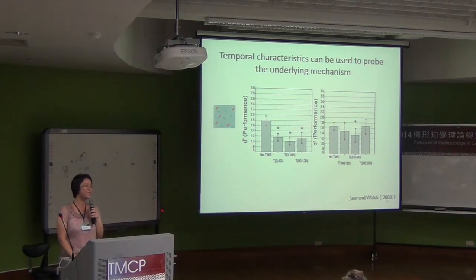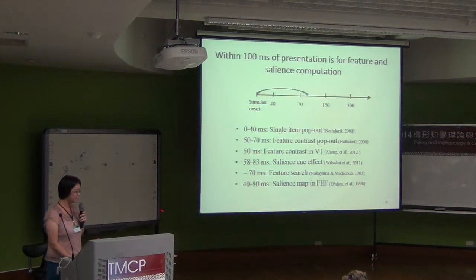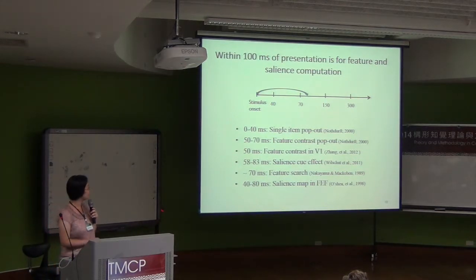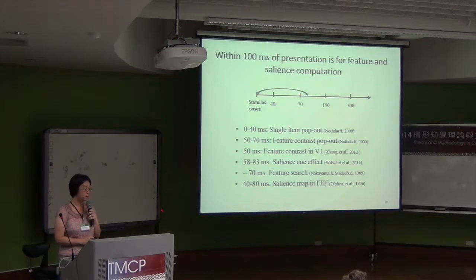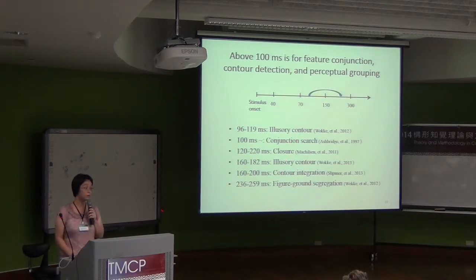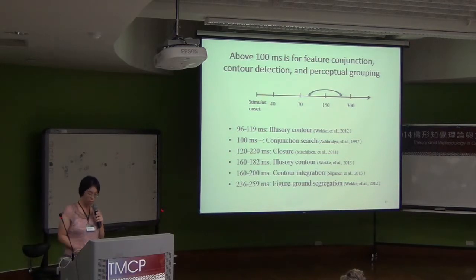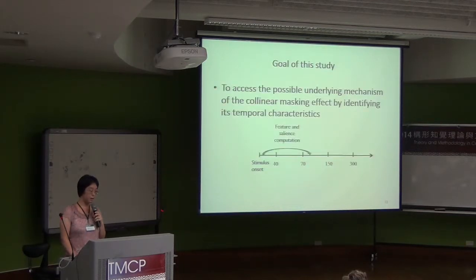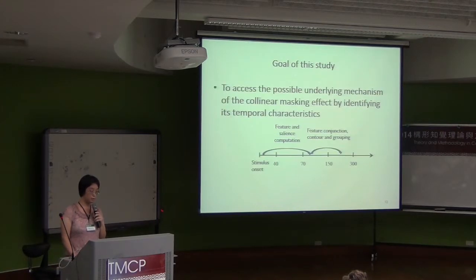We don't have TMS, so I will show behavioral data only today. But whether it is TMS, ERP, or behavioral data, the literature shows that within 100 milliseconds of stimulus duration, the brain is computing features or salient information. Beyond 100 milliseconds, the information relates to illusory contours, conjunction, contour integration, or figure-ground segregation. As noted before, the collinear masking effect has two components: one is salience and one is collinearity. So we want to know whether the collinear masking effect happens at a very early stage, a later feature conjunction stage, or both. That is the goal of this study.